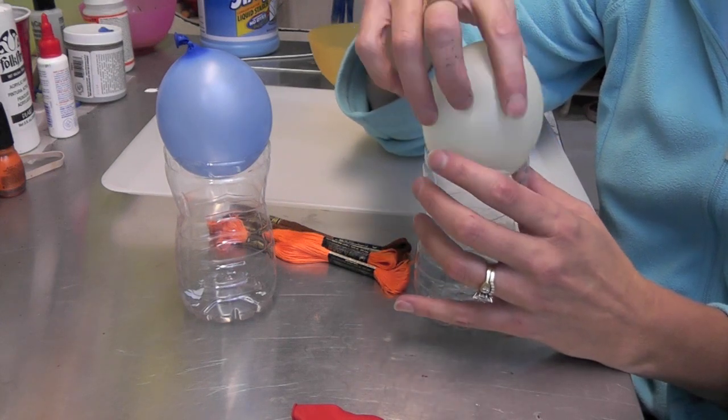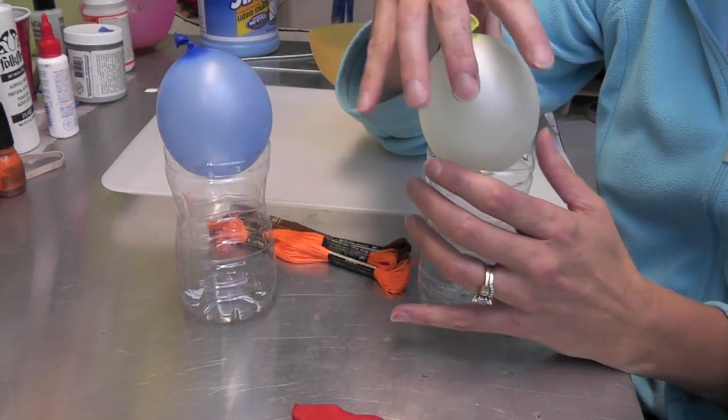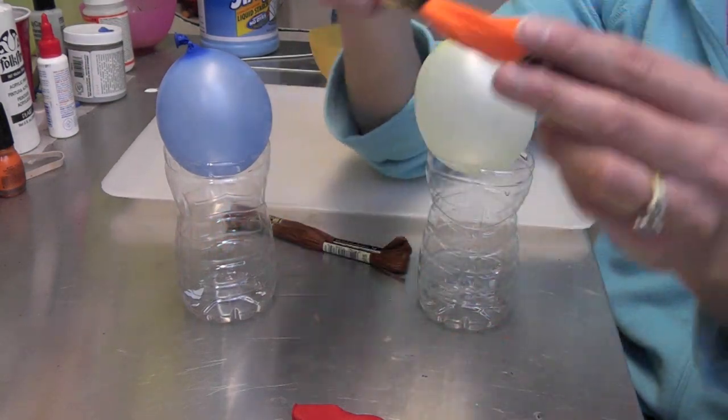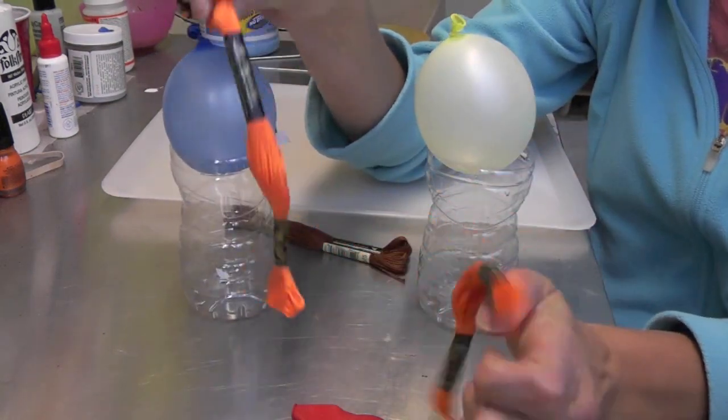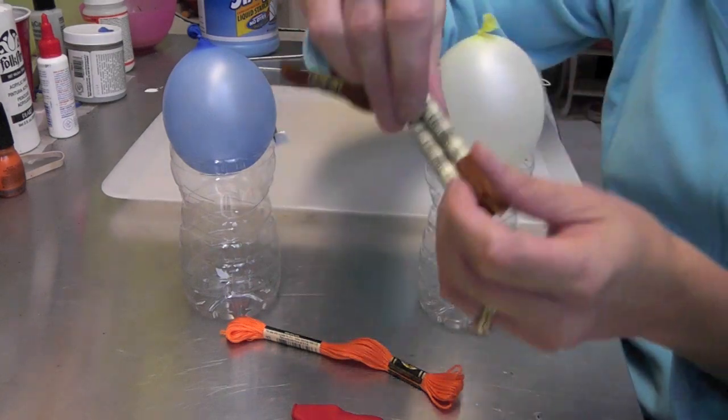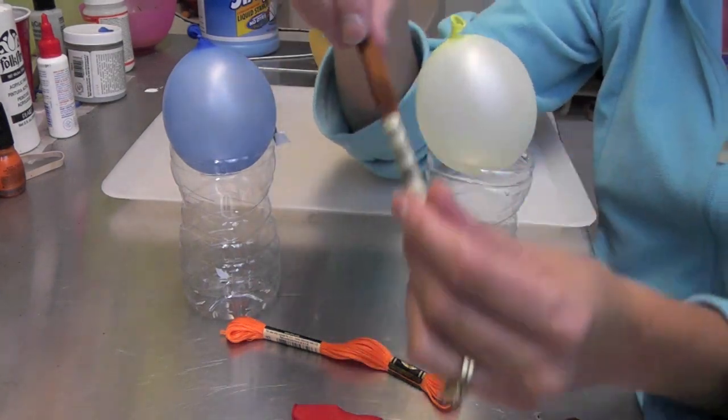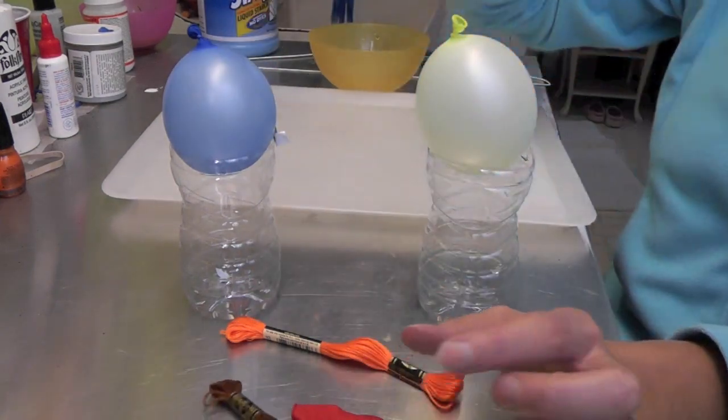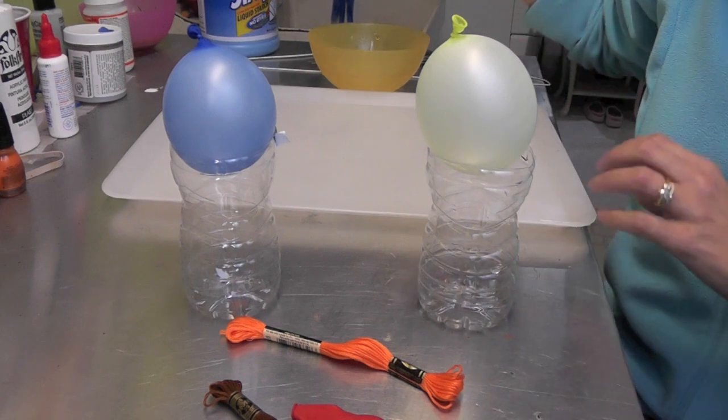What we're going to need is embroidery floss in orange. We need two of these, and I believe one of these will be plenty, because we're going to try to do the stem on there. I haven't tried it yet, but I don't know why it wouldn't work.